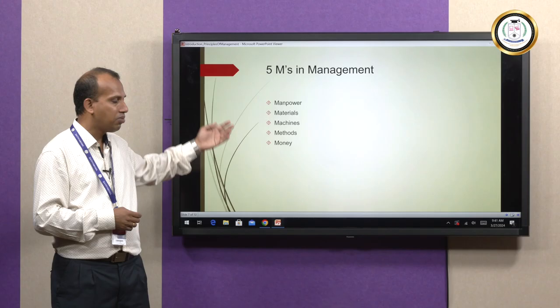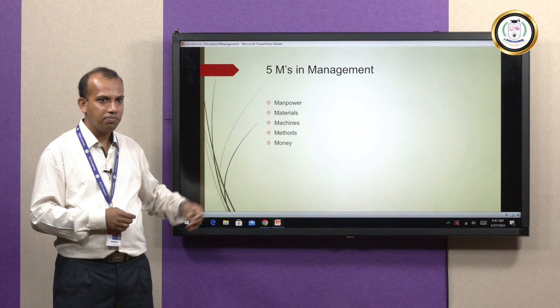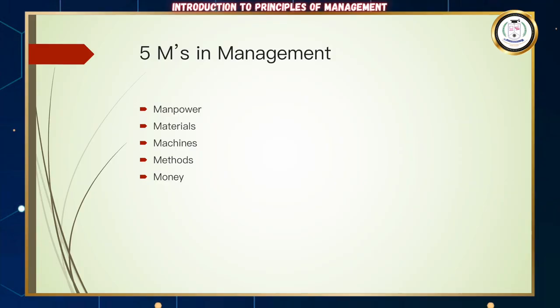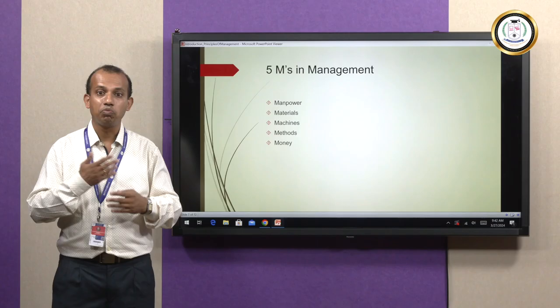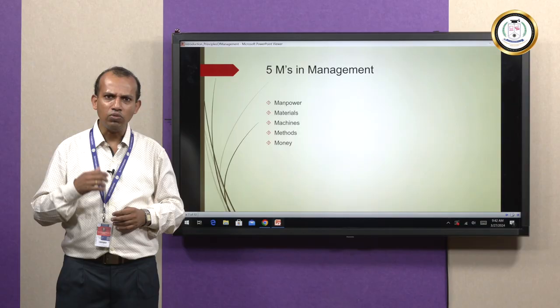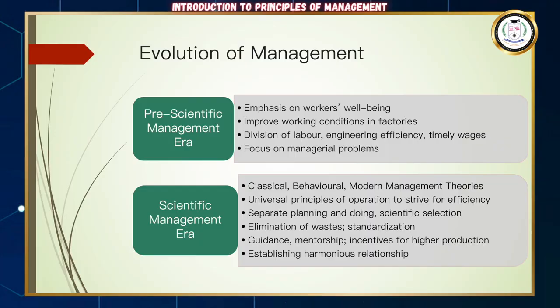The third M is machines and equipment — without manpower and materials, machines would be redundant. We are seeing so much artificial intelligence and automation, from agriculture to IoT. The fourth M is methods — the process and operation cycle: who does what and at what frequency. The fifth M is money — not just cash and funds, but also debts, bonds, and stock options. These broadly are the five M's in management.